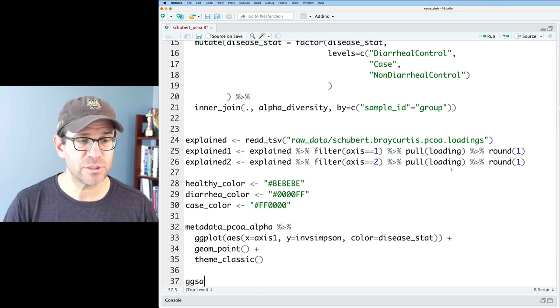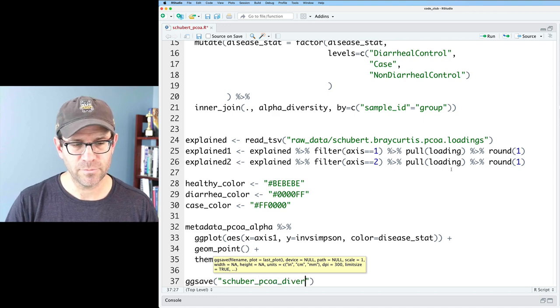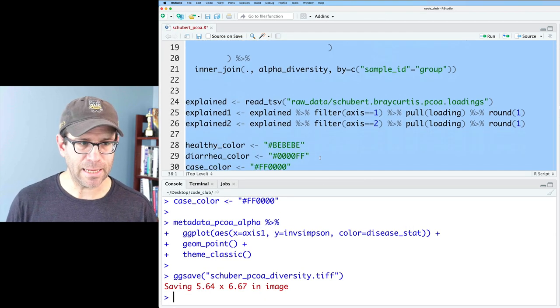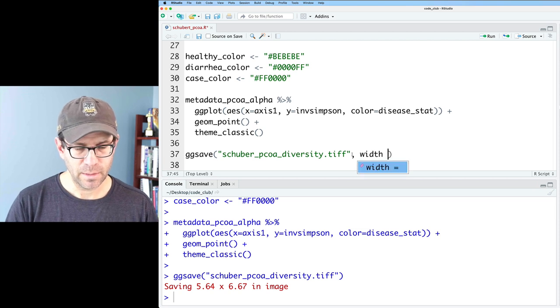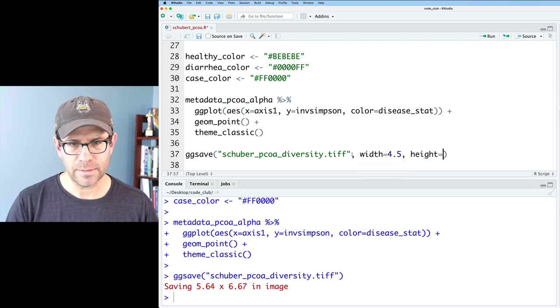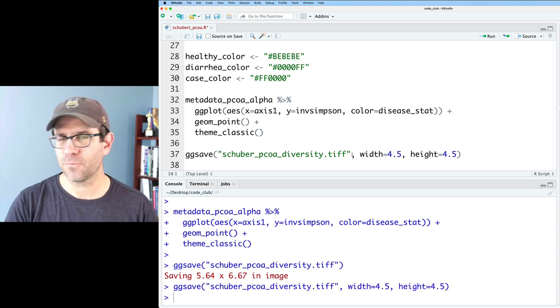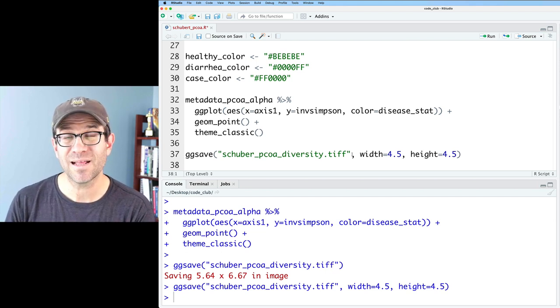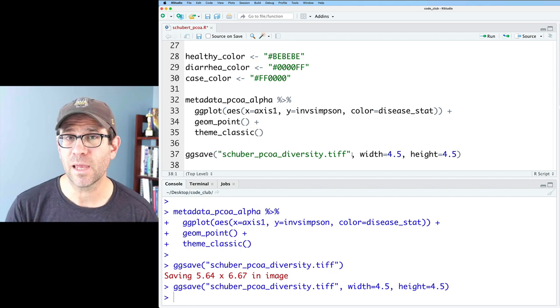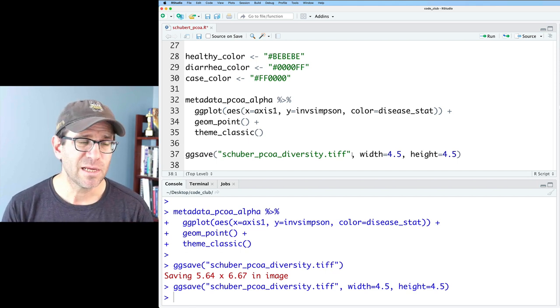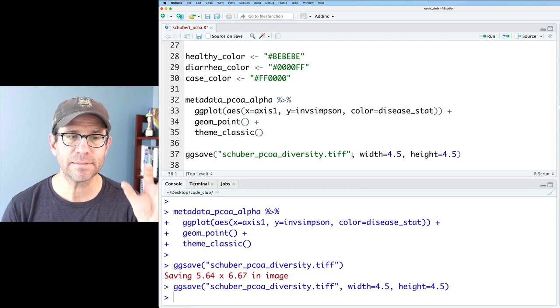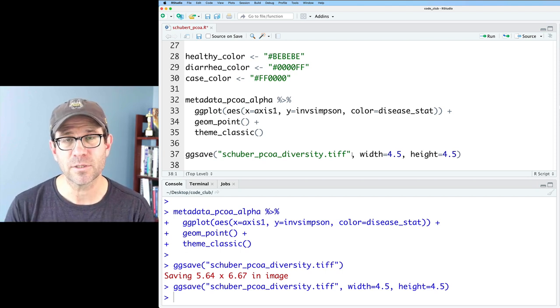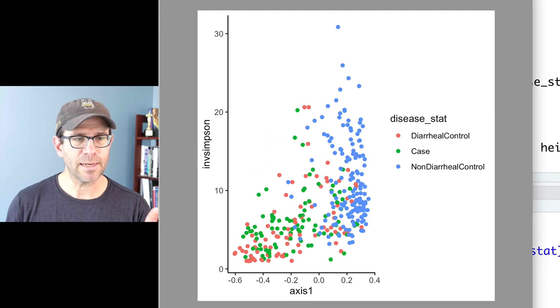I will save this as ggsave Schubert PCOA diversity dot tiff. Give that all a run. Looking at my tiff, I have this figure. Let me go ahead and size that. So I'll do width equals 4.5, height equals 4.5. If you've watched me, I'm not a big lover of the RStudio plotting tab. I think it's useful for exploratory data analysis. But if you're trying to make a plot that's going to go into a manuscript or a presentation or onto a website or somewhere else, I think it really pays to develop it as though you are running this outside of RStudio and giving it all the parameters for how you want to save it.